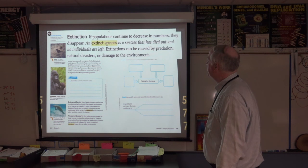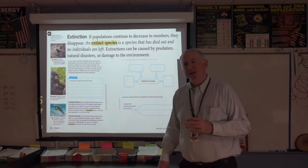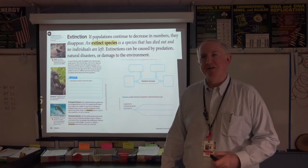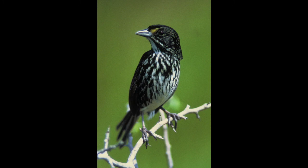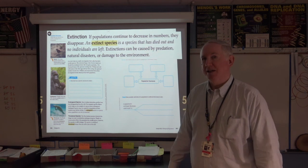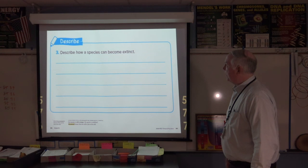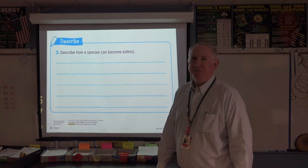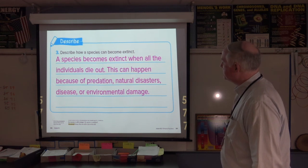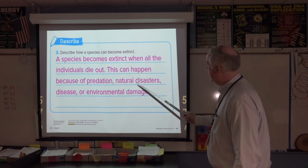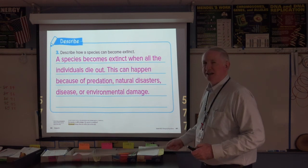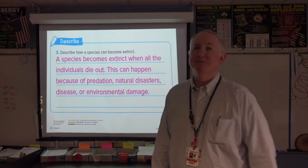Extinct species is pretty obvious — a species that has died out and no individuals are left. There's a neat story about Merritt Island. Some of you live there. If you read in the text about a little bird called the Dusky Seaside Sparrow: in Merritt Island, to get rid of the mosquitoes, they would flood a lot of the areas with salt water, which would not allow the mosquitoes to live, but it also destroyed the habitat of the sparrow. So we ended up losing that bird. A species becomes extinct when all the individuals die out. This can happen because of predation, natural disasters, disease, or environmental damage. Remembering these four main things may help us in the near future. The answer was in the book — you just had to read it.